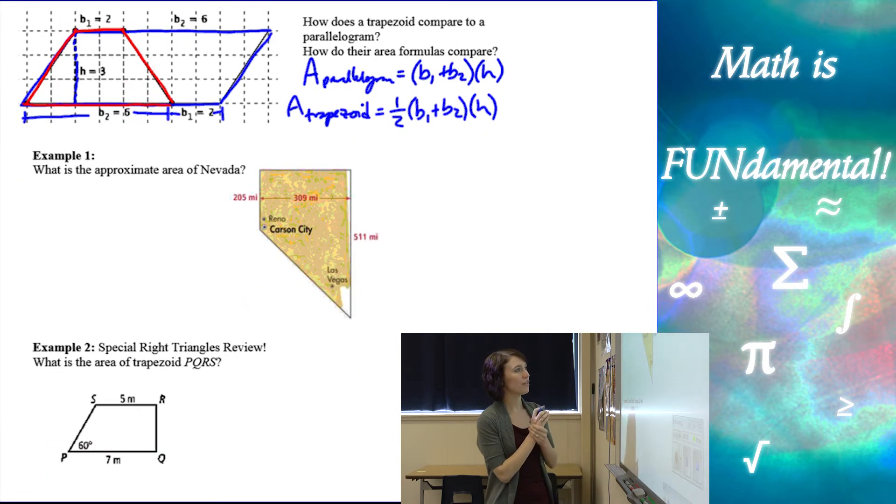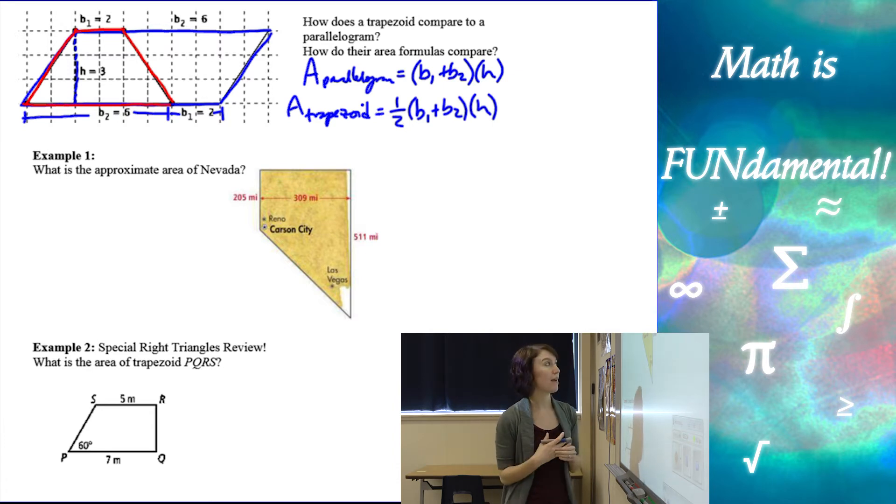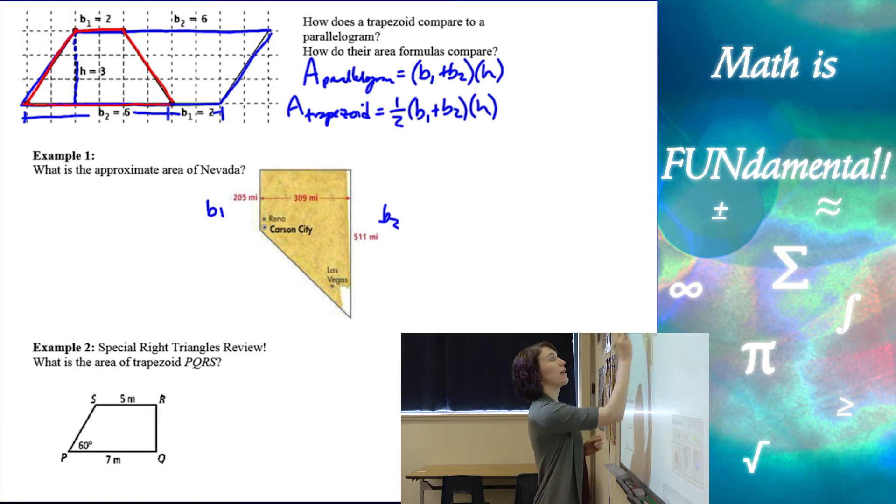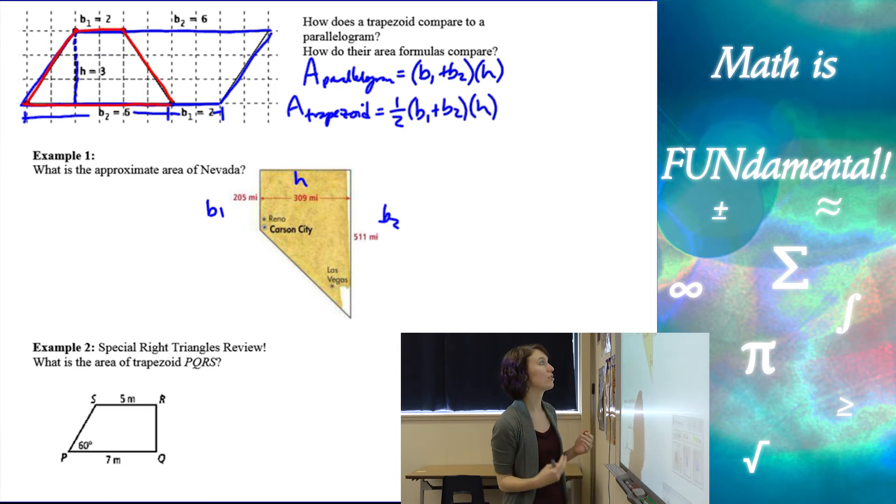All right, let's see an example here. So I have a picture of the state of Nevada, and we need to find the approximate area giving our dimensions. So we have two bases. Here's my B1, my B2, and then my height is the piece that goes perpendicular between the two bases.